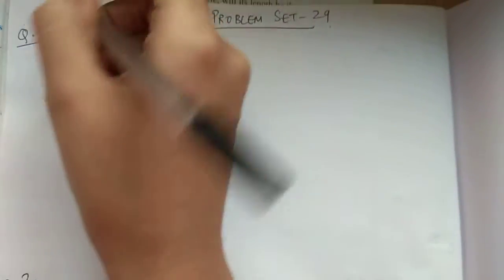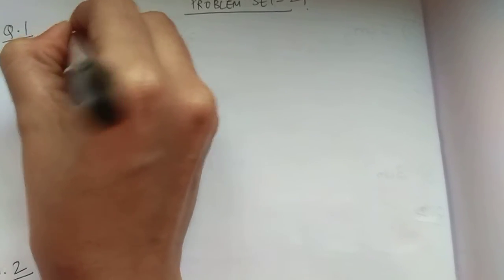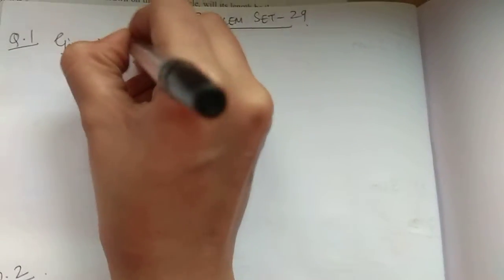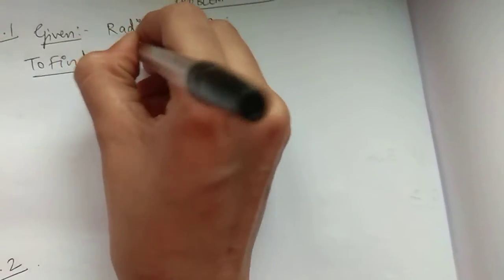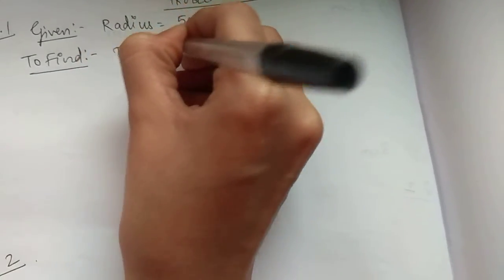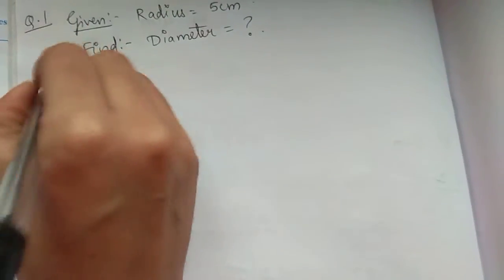So starting with given, what is given in this? Radius. That is how much? 5 cm. To find, what we have to find over here? Diameter.